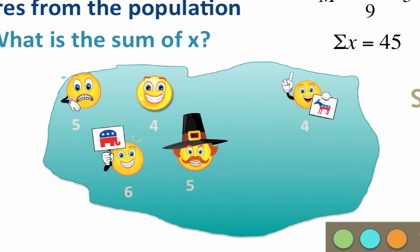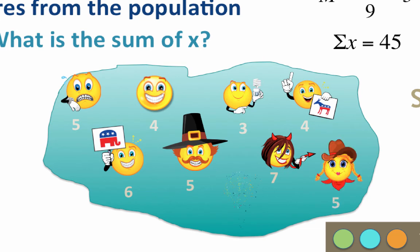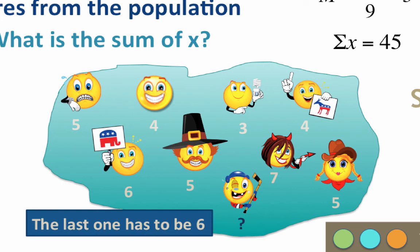Ooh, the next one's a 7. That brings us down to 14. Next is 3. That leaves us with 11. And the next to last person got a 5. We only have one more person left. What does his score have to be? The last one has to be a 6.